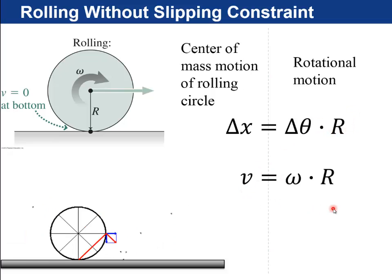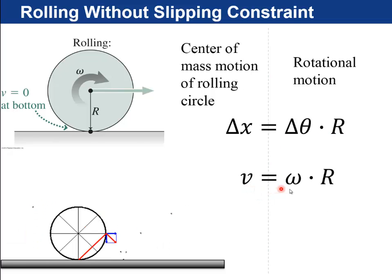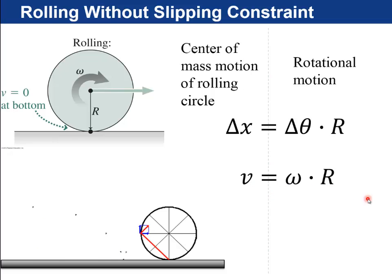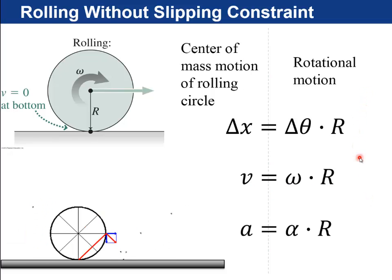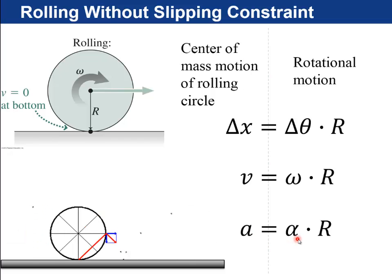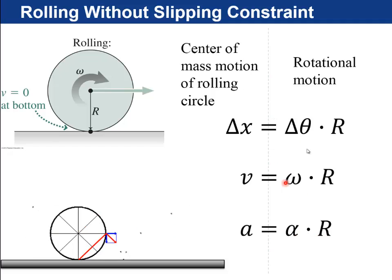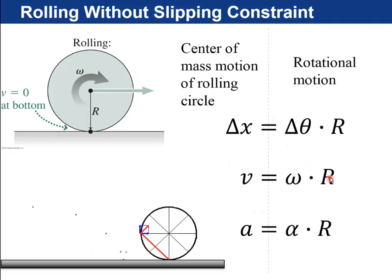Here's the equation the textbook really likes, which is that the speed of the center of mass of the wheel equals omega times r, but both of these are true, and then also it's true that the acceleration of the wheel is going to be the angular acceleration of the rotation times r. So these are all constraints, but this is the one that you see most often in the problems.